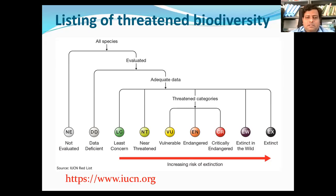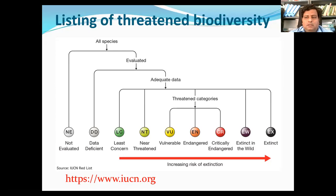After a given species has been thoroughly evaluated, it is placed into several categories accordingly. In addition to the three categories you can see here — vulnerable, endangered, and critically endangered — these are considered under the threatened categories.